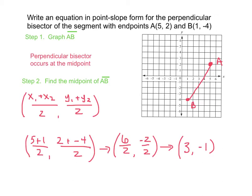Looking back at our graph where we graphed AB, the midpoint — you can probably tell by the picture — is going to be at 3, negative 1, right there. Taking a guess, your perpendicular bisector will look something like this. Moving on to the next page, we can find the slope and then write the equation of it.